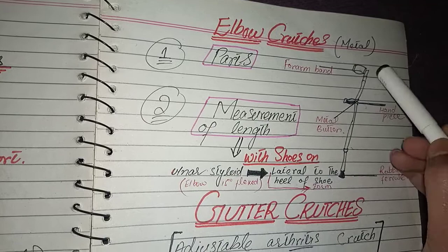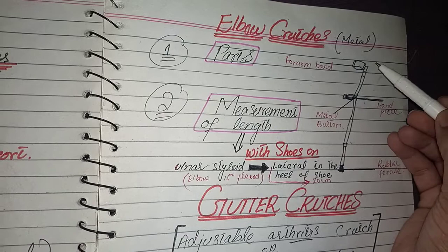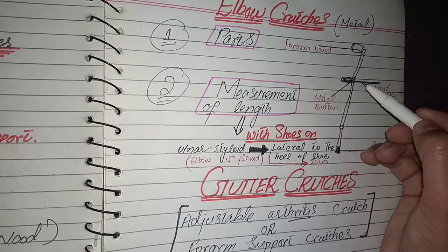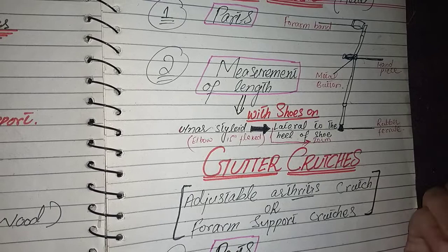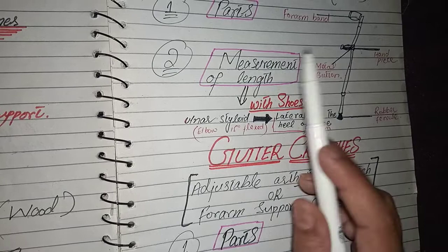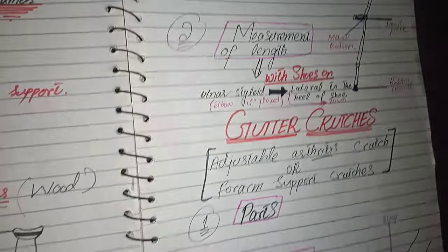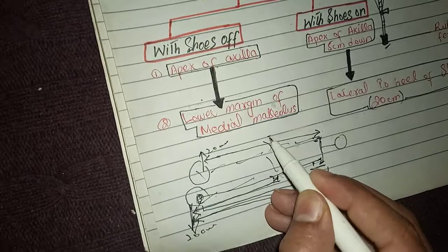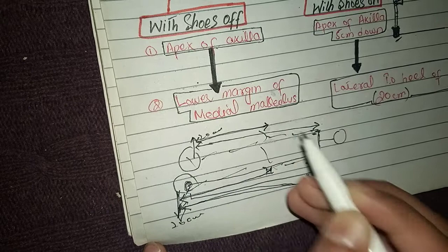Now we learn about the elbow crutch. Elbow crutch is made of metal. There are different parts: first the forearm band, and the second part is the handpiece. There is also a metal clip for length adjustment, similar to the axillary crutch. The last part is the tip, also called the rubber ferrule. We take the measurement of length with shoe on, from the ulnar styloid process to 20 cm lateral to the heel of the shoe. This is the measurement procedure for elbow crutch.